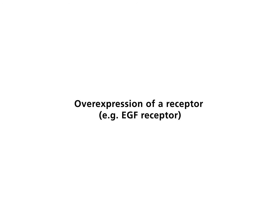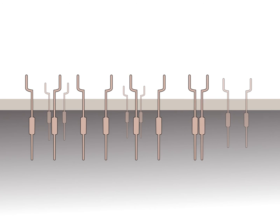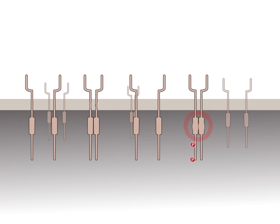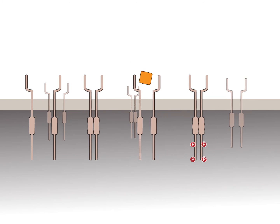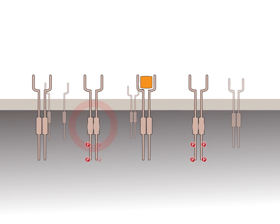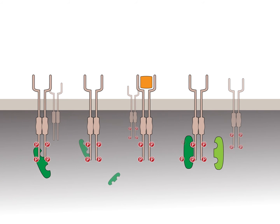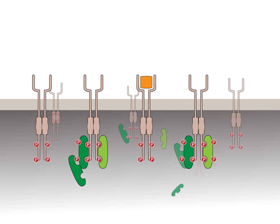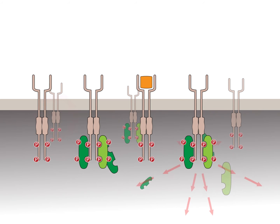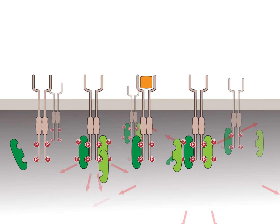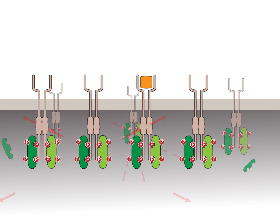Overexpression of a receptor — for example, the EGF receptor. Due to the amplification or dysregulation of receptor genes, the density of receptor monomers in the plasma membrane increases. The receptors dimerize spontaneously, independent of ligand binding, leading to inappropriate signaling.